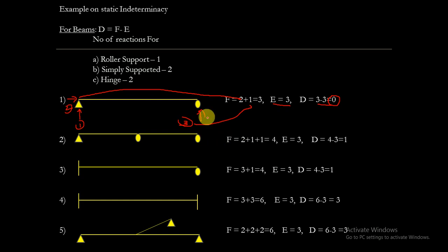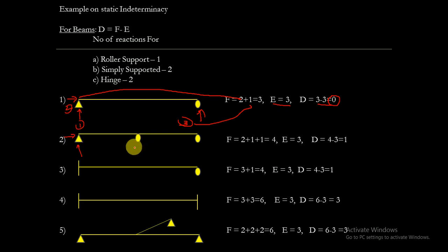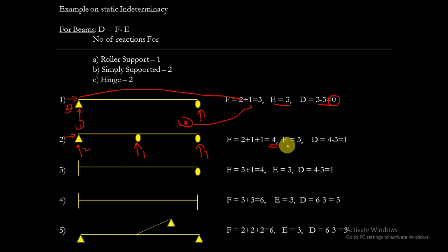The structure has zero static indeterminacy. For another structure with two unknown reactions at one support, one at another, and one more — totalling four unknowns — four minus three equals one, so the static indeterminacy is one.